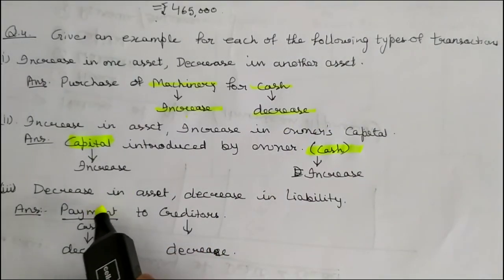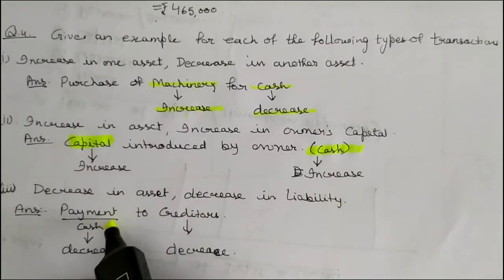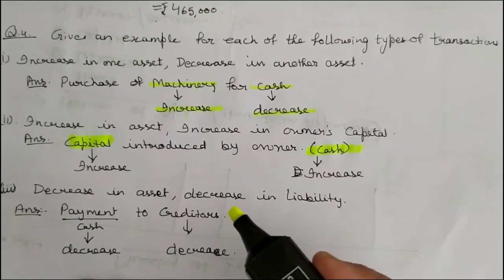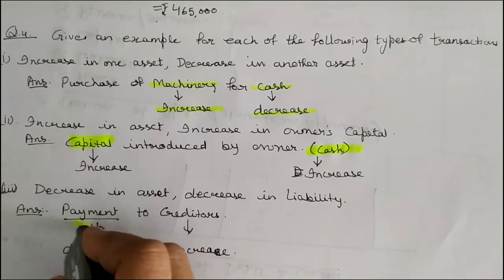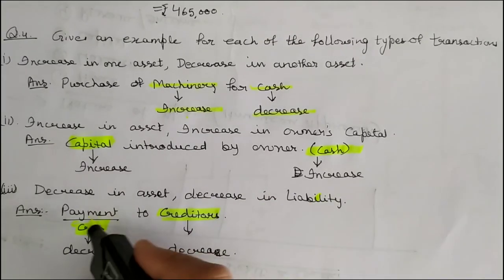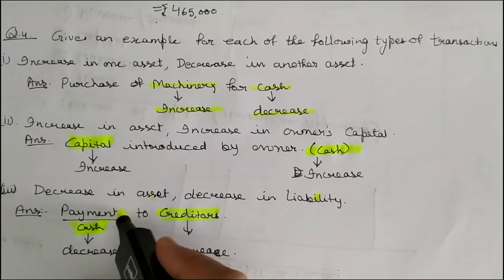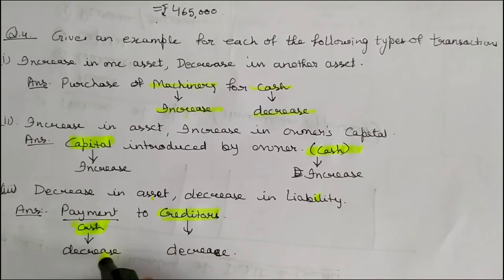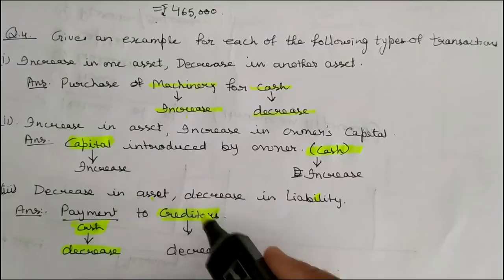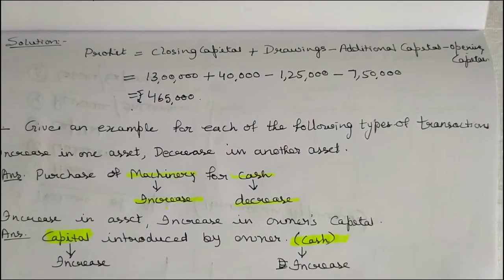Next: decrease in asset and decrease in liability. An example is payment to creditors — creditors are your liability and cash is your asset. On payment, cash will decrease and creditors will also decrease. In the next class I will tell you the rules of debit and credit. Okay, bye bye.